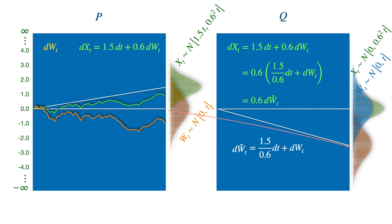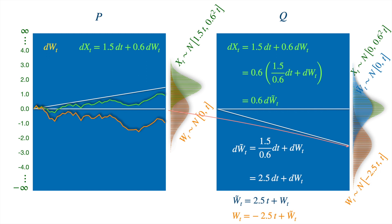Let's standardize the term containing the Brownian by removing the 0.6. So the process X will have zero mean if we just set what we have in the brackets equal to W-tilde, which is the new Brownian, and we have thus deduced the relationship between the new Brownian and the old Brownian. Dividing 1.5 by 0.6 gives 2.5, and we can integrate to express the relationship in terms of the process values. And if we isolate W on the left-hand side, we can see the old Brownian has a drift rate of minus 2.5 under the new measure Q, so the drift of X went down from 1.5 to 0.